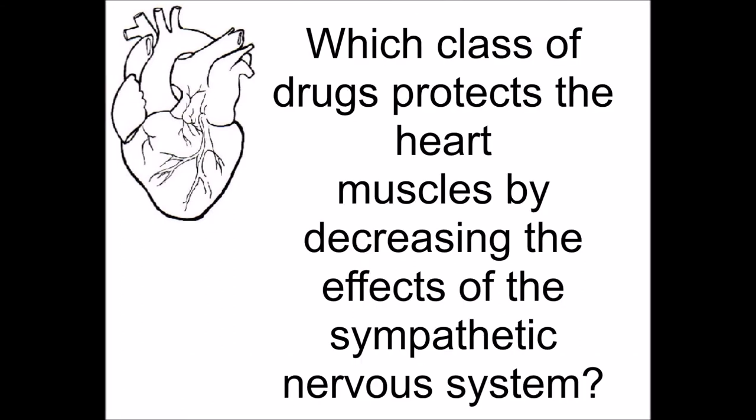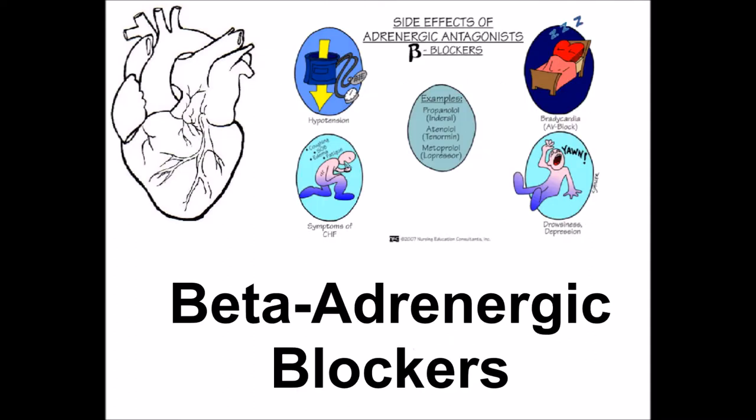Which class of drugs protects the heart muscles by decreasing the effects of the sympathetic nervous system? Beta-adrenergic blockers.